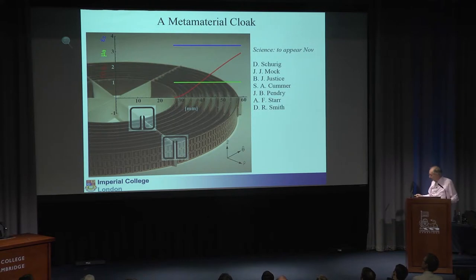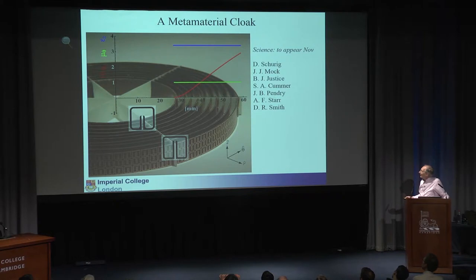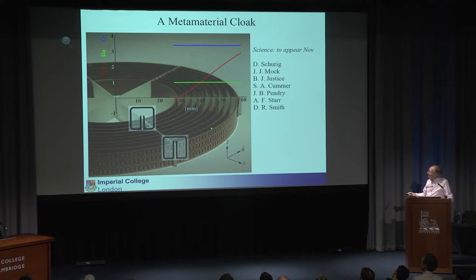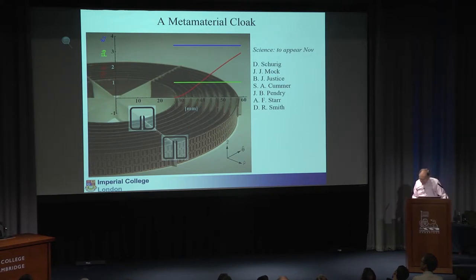Here's the first shot at making a cloak, done by David Smith. They took metamaterials because ordinary materials won't do — they don't have a continuously variable refractive index. This is the gradient of the refractive index according to the formula, from the outside to the inside of this cloak. It's a finite dimension, designed for radar waves, with a hidden region inside.